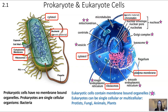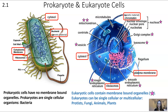Eukaryotes have a nucleus; prokaryotes do not. The red boxes highlight similarities between prokaryotic and eukaryotic cells: all of them have a membrane, ribosomes, cytosol, and genetic material in some form. Prokaryotes are single-celled — our examples are bacteria. Eukaryotes can be single-celled or multicellular and include protists, fungi, animals, and plants.